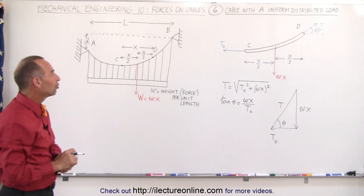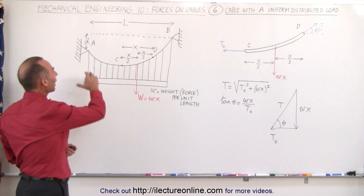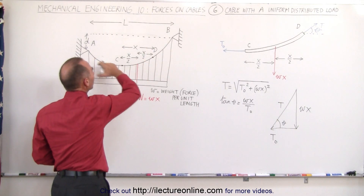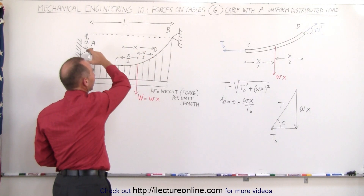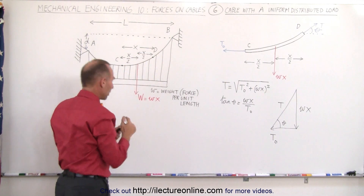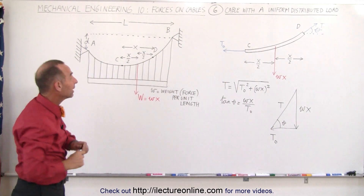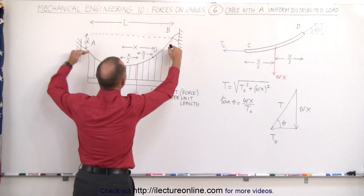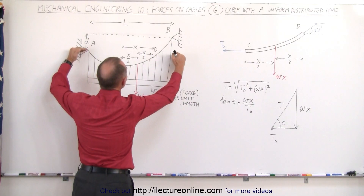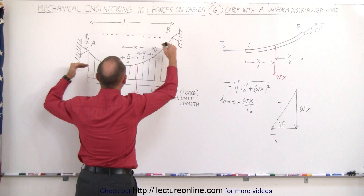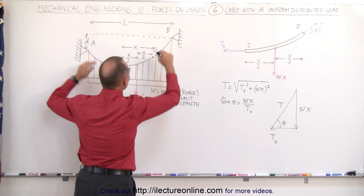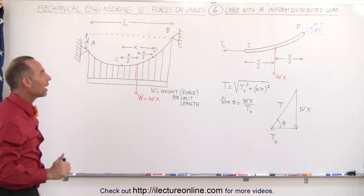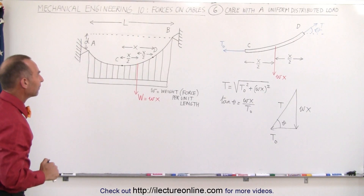Now we're going to show why we say that this is a parabolic curve — that the cable will be in a parabolic shape. Even if A and B are not at the same height, if they're at different heights, it doesn't matter. This will still be parabolic. Let me show you why.